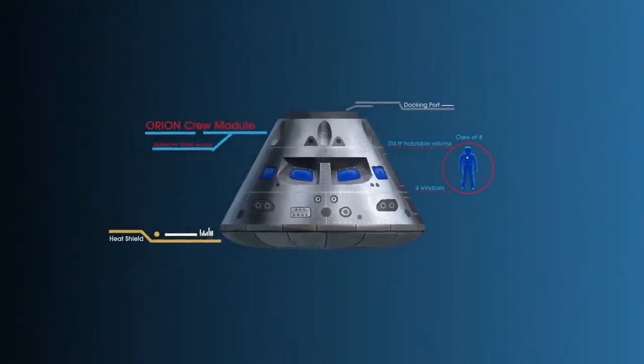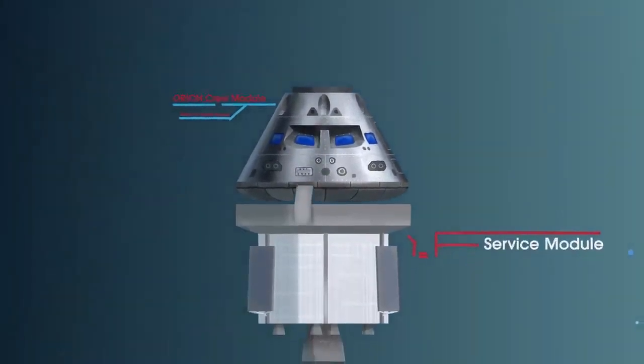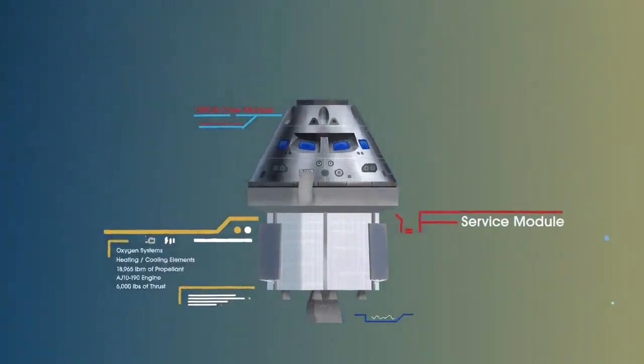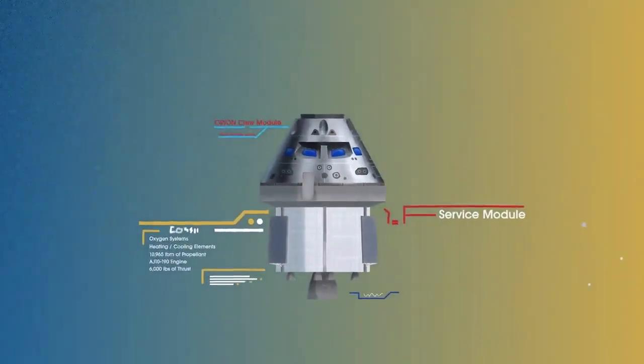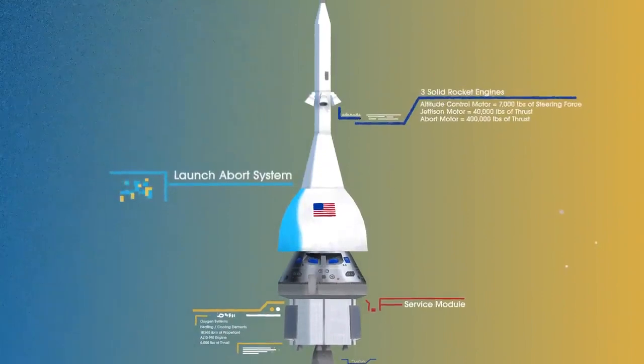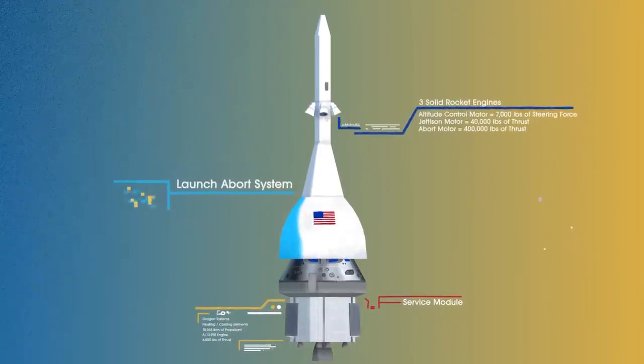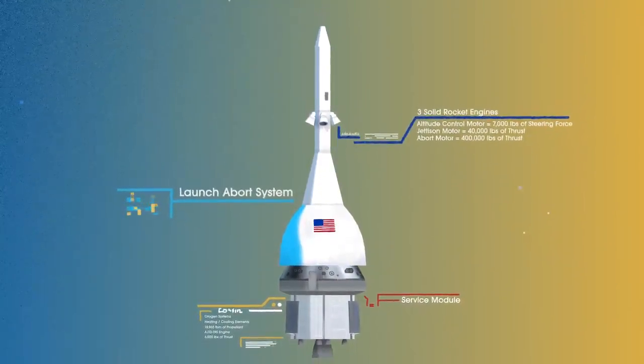The crew module, where up to four astronauts will live and work throughout the flight. The service module, with life-support systems for the crew and its own engine and fuel reserves, and a launch abort system, with engines capable of pulling the crew module to safety during launch should anything go wrong.